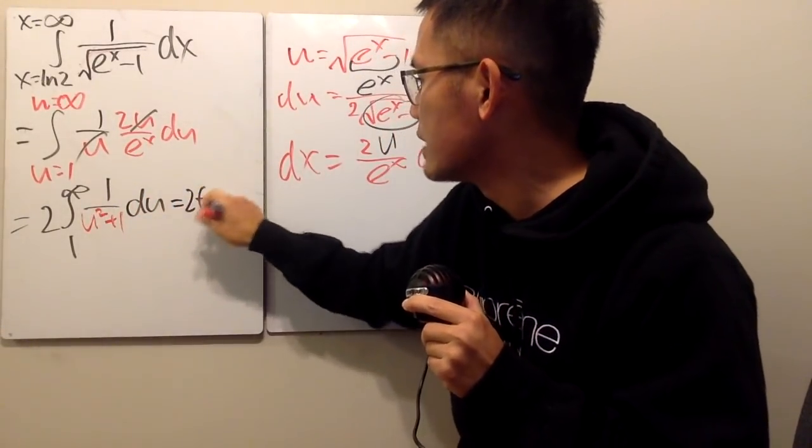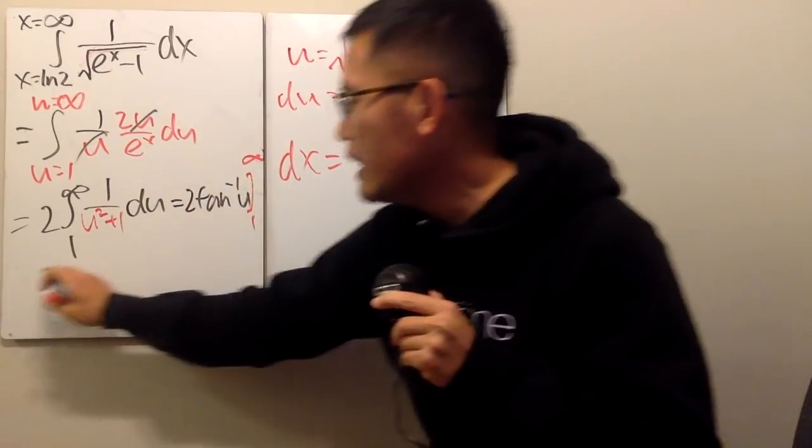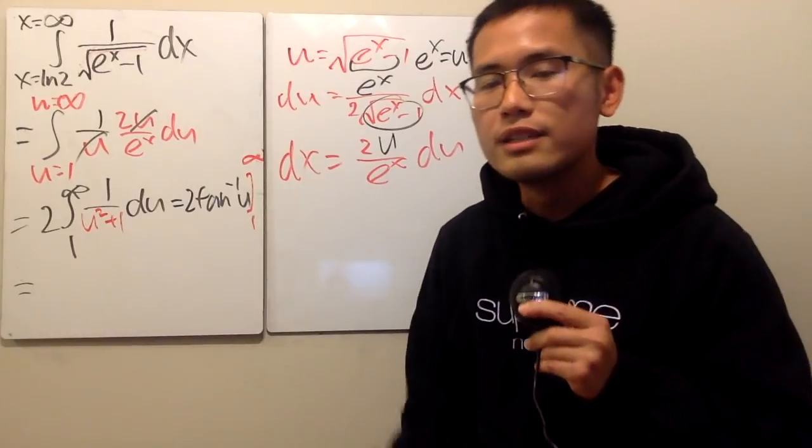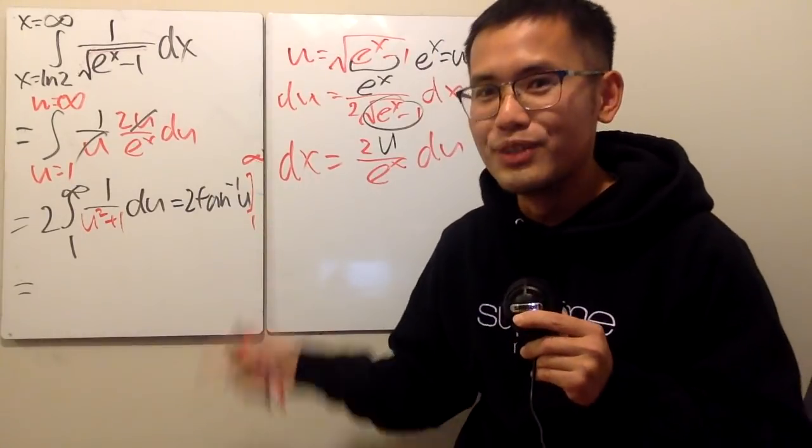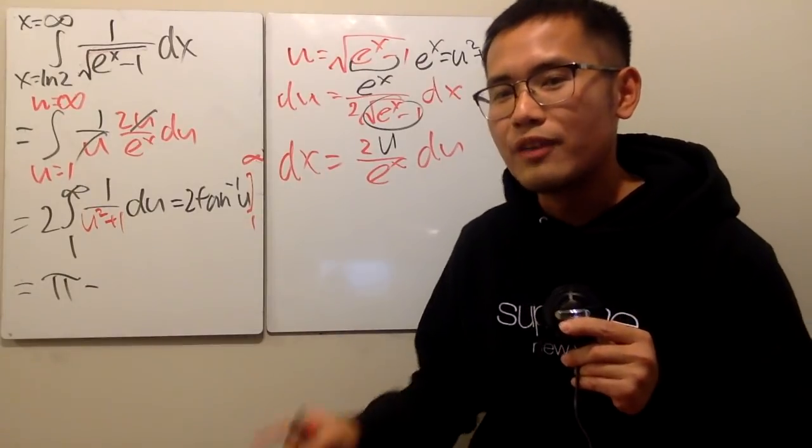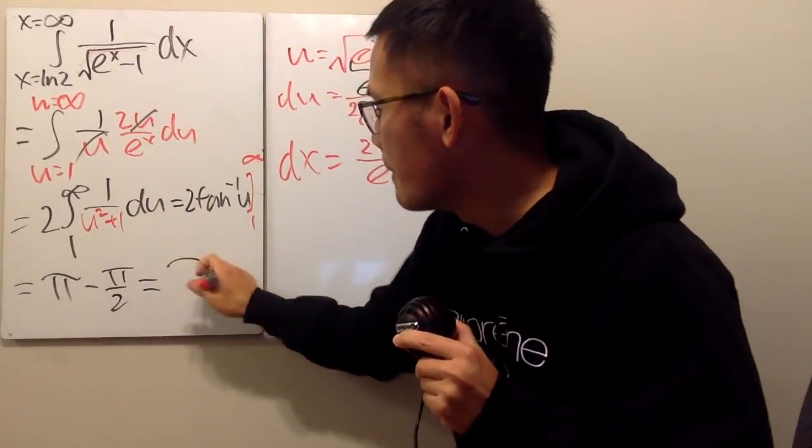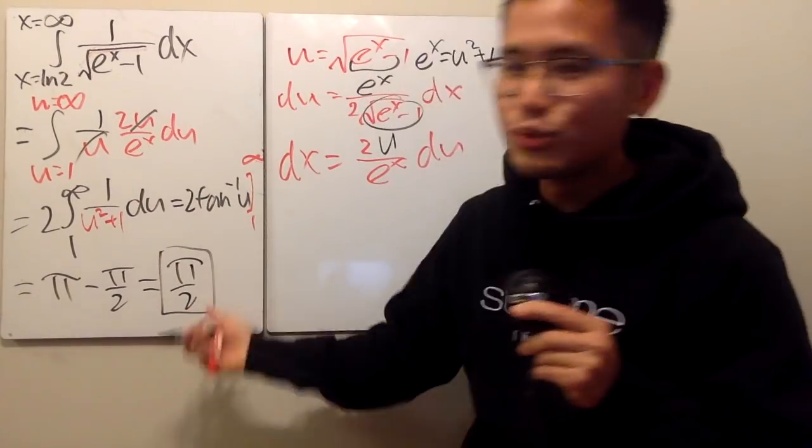And then, of course, integrate this guy. We get 2 times the inverse tangent, and of course we have u, and then we are going from 1 to infinity. And now let's do this in your head. Put infinity right here, inverse tangent of infinity is pi over 2 times 2 is pi. And then we are going to minus, put the 1 right here, inverse tangent of 1 is pi over 4 times 2 is pi over 2. And you get pi over 2. And as you can see, this right here is the first one.